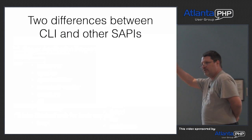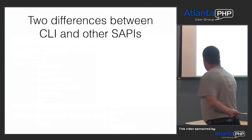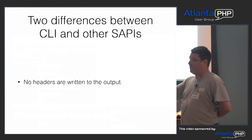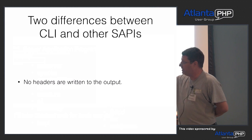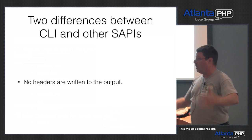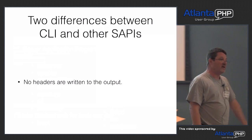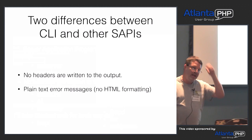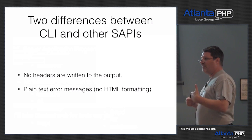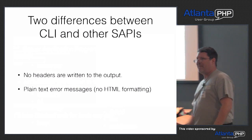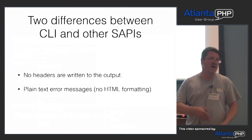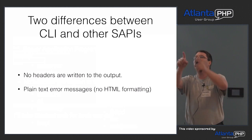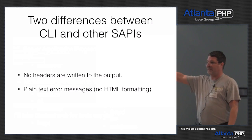Before we get started, there are two things you need to know about command line programming. First, the header() command — if you output custom headers, the header command will take whatever you put in and just stub it out. It does absolutely nothing. It doesn't fail on you. The obvious reason is we have no browser to interpret that header. The second thing, and I'm so glad we have this now, is that your error messages are in plain text. Back before PHP 5.1, we would get full HTML as your errors — looking at full HTML in a command line is not fun. Nowadays, it just outputs plain text.